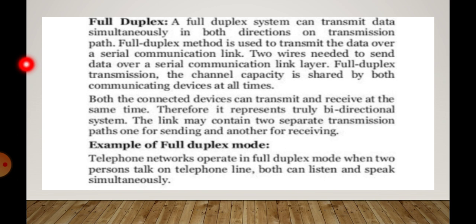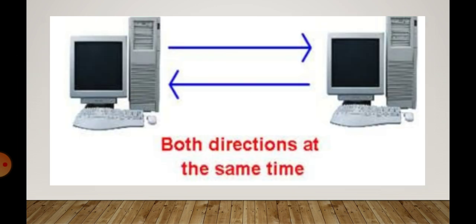Edhi agar ap representation di gal karriye, taa bidireksional system hoon da hai — dhuno directions dhe vich data, at the same time, send vhi kita janda hai, at the same time data receive vhi kita janda hai ga. Agar ek diagram hai — system A hai, system B hai — system A jeda hai ga, ho B nho data send karriye, te naldi naldi at the same time B system vhi A system nho data send karriye ga. Dhunnoh system send vhi karriye ga te receive vhi kar saka dhenne, same time dhe utteh.